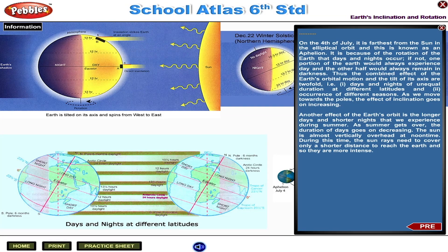Another effect of the Earth's orbit is the longer days and shorter nights we experience during summer. As summer gets over, the duration of days goes on decreasing. The Sun is almost vertically overhead at noontime, and during this time, the Sun's rays need to cover only a shorter distance to reach the Earth, so they are more intense.